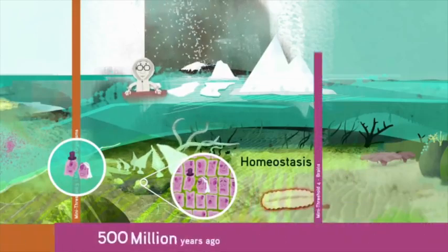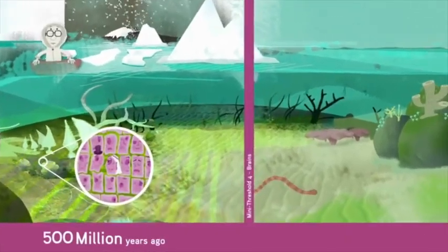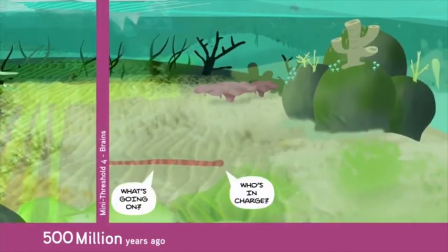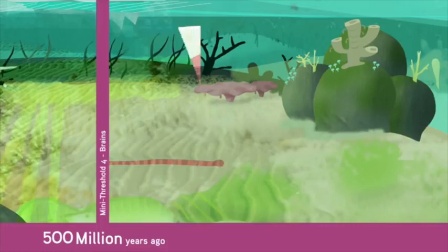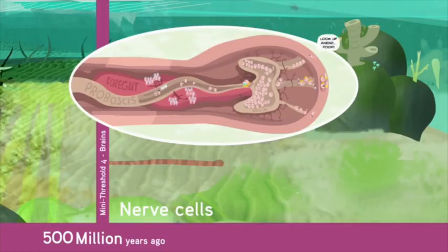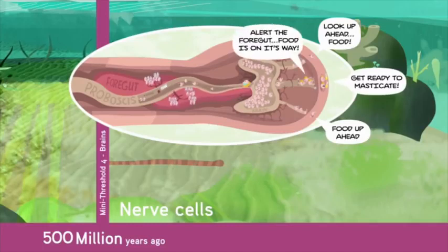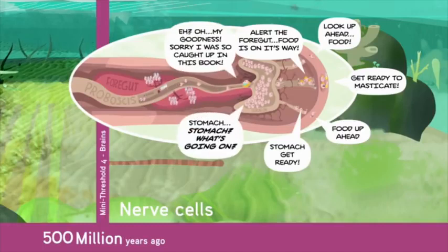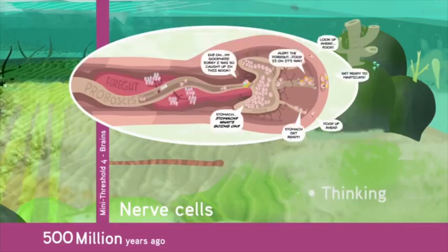The development of brains is mini-threshold 4. Multicellular organisms needed a way to coordinate all the activities going on inside them, and this became the work of special nerve cells. In some organisms, these cells began to cluster at the head and down the spinal cord to form the first brains. Organisms with brains could process much more information, and they could react to it in even more complex ways, which enabled richer and more sophisticated activities like thinking, and perhaps even consciousness.